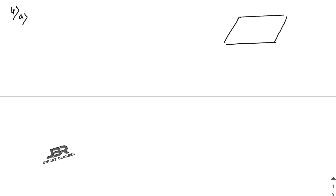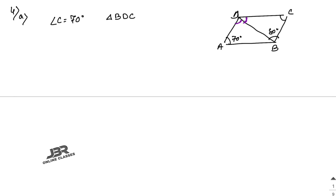Sum number 4a: ABCD is a parallelogram. The diagonal BD forms angle DBC = 80° and angle BDC = 70°. Since angle BCD (i.e., angle C) is opposite to angle A, we first work in triangle BDC. The remaining angle BDC = 180 − (80 + 70) = 30°.